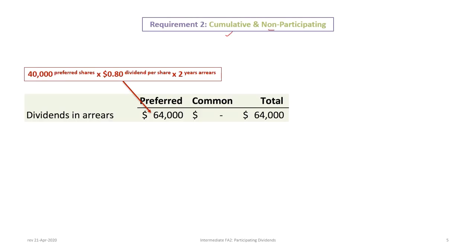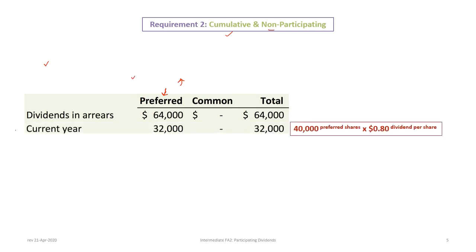Next, the preferred shares are now cumulative but non-participating. We must now look at dividends in arrears for the preferred shareholders. There are 40,000 shares paying an $0.80 dividend, but two years are in arrears, so the first $64,000 of total dividends must be applied to dividends in arrears. Then we look at the current year: the same 40,000 shares at $0.80 gives another $32,000.